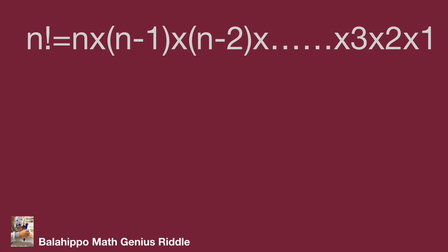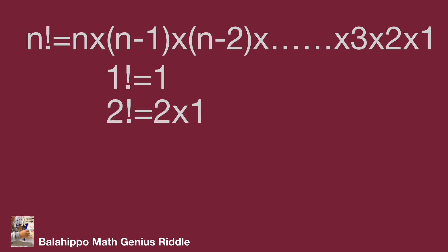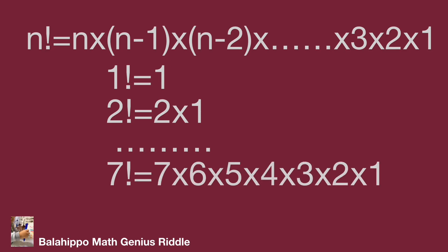For example: 1 factorial equals 1. 2 factorial equals 2 times 1. Following the same pattern, 7 factorial equals 7 times 6 times 5 times 4 times 3 times 2 times 1.